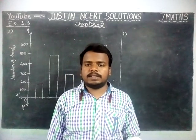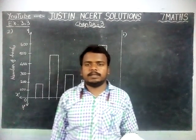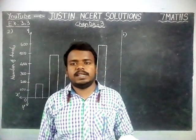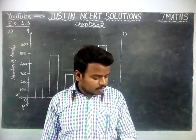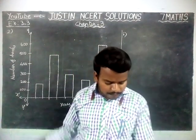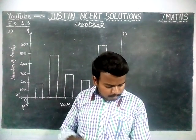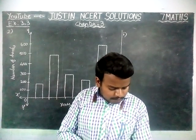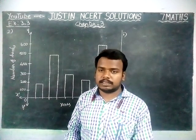Hi students, welcome to the stream of NCIT Solutions. In this video we are going to see Class 7 Maths Chapter 3 Exercise 3.3, Second Question. The question is: Read the bar graph which shows the number of books sold by a bookstore during 5 consecutive years and answer the following questions.